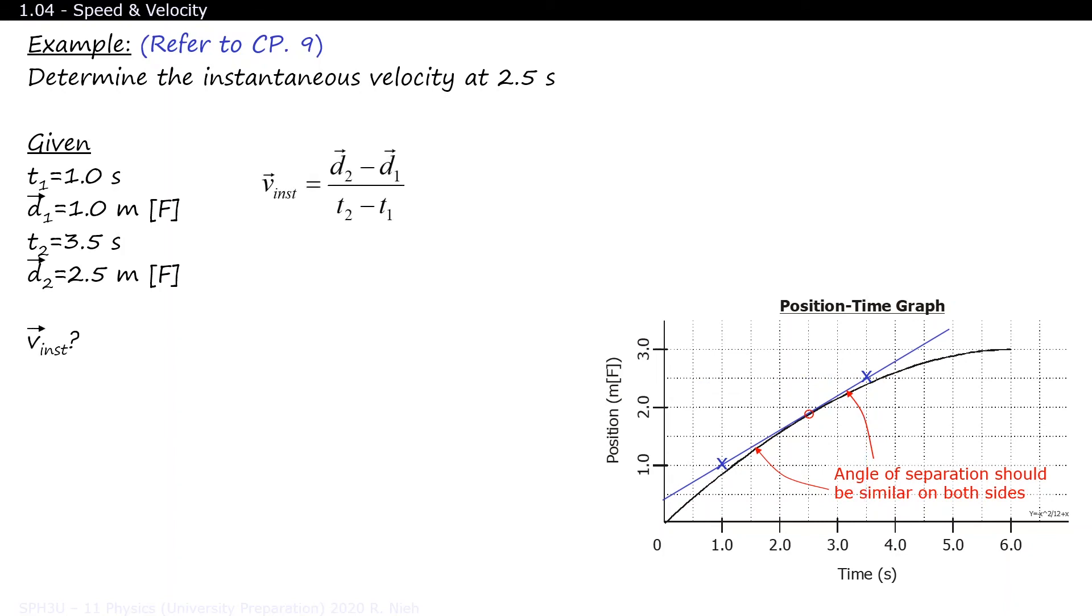We then use the velocity formula in its expanded format. Plug in the values, and with 2 sig fig givens, you'll have 2 sig fig answers.